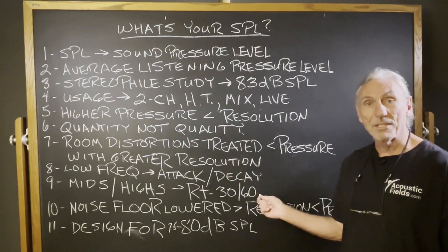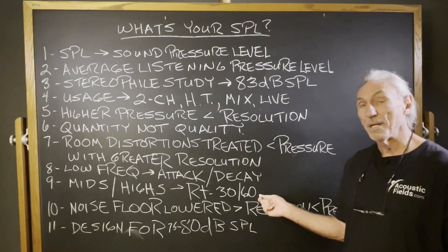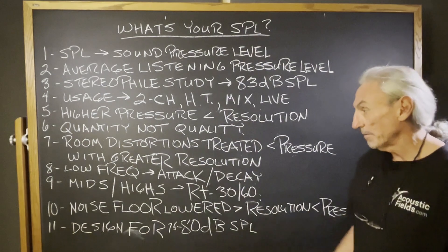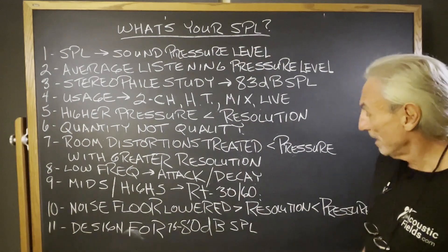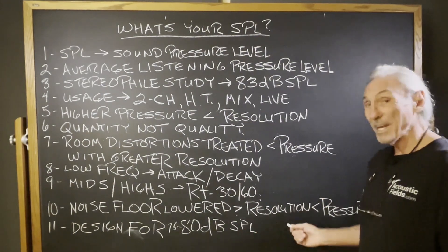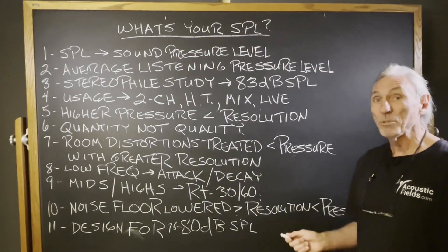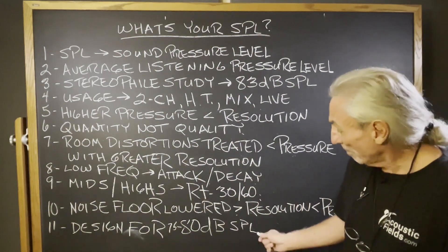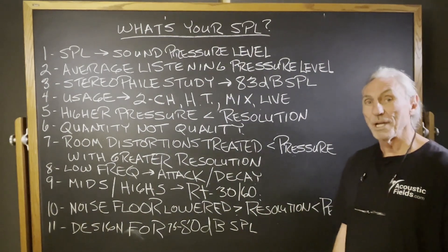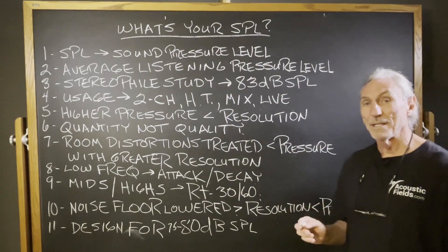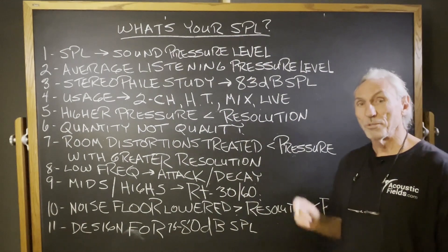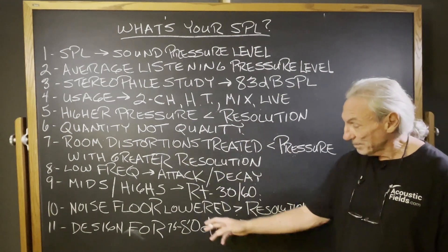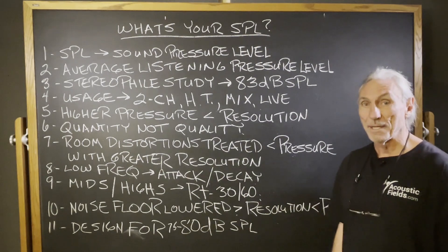The mids and the highs are all about reverberation — the reflections of that energy off the surfaces of the room. If we have a lower noise floor, we're going to have higher resolution. That's the goal. When we design two-channel listening rooms, I try to get the resolution very high around 75 dB SPL, 80 at a peak.